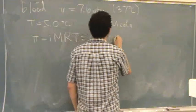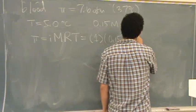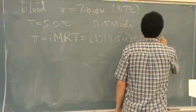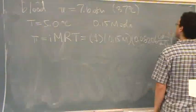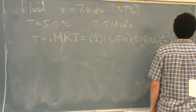Molarity is 0.15. R is 0.08206 liters atmospheres per mole Kelvin. And then it's 5°C, which you've got to add 273 to get Kelvin.